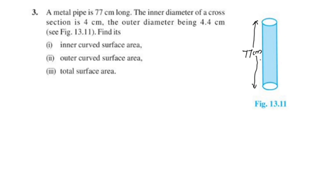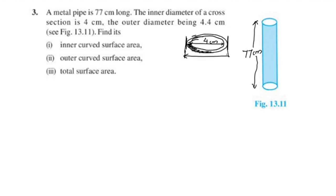This is the height of the pipe. This pipe is thick. The inner diameter is 4 centimeters. The outer diameter is 4.4 centimeters. Now we have to write the height. The height is 77 cm.